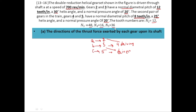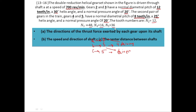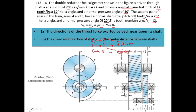What we have to find in this problem is the direction of the thrust forces exerted on the shafts by the gears mounted on them. We also need to find the speed and direction of shaft C, and the center distance between the shafts — that is, the distance between shaft A and B, and between shaft B and C.